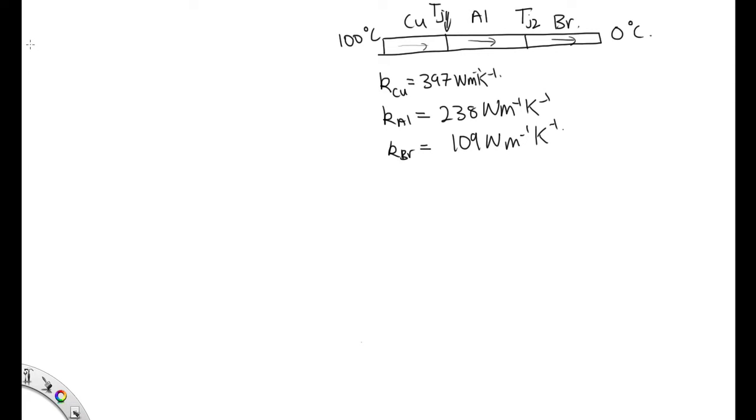So that tells us that P, which is equal to K for copper. Now for copper, it's got surface area A, and it's over a length L, which is 6 meters in this case. And the temperature change across the copper is 100 minus TJ1.